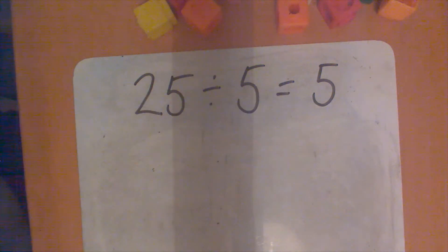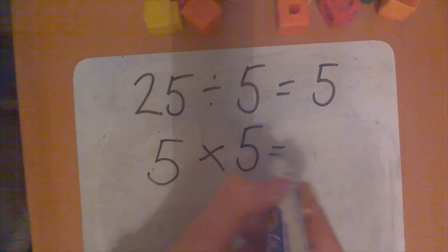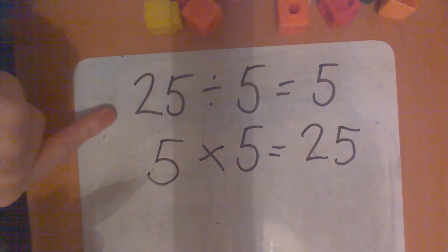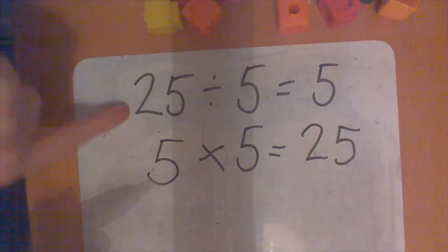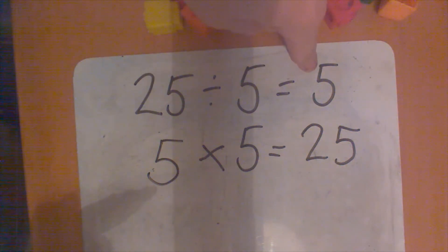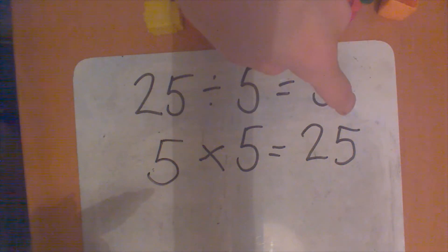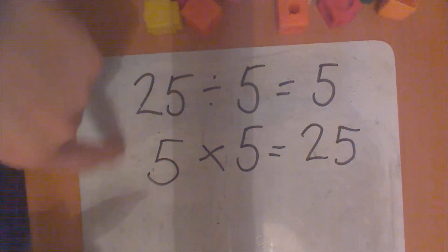Twenty-five divided by five equals five. We did that by counting in fives on our hand: five, ten, fifteen, twenty, twenty-five. How would I write that as a multiplication sentence? I did five lots of five and landed on twenty-five — five times five is twenty-five. That is the inverse calculation of my division sentence. The top sentence tells me twenty-five shared between five equals five; the bottom tells me five times five makes twenty-five.